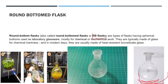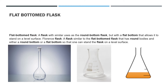They are also called RB flasks — 'round bottom' — they just took the first letter from 'round' and the first letter from 'bottom' plus 'flask,' and that's how they named it. They are used in biochemical work and chemical work.